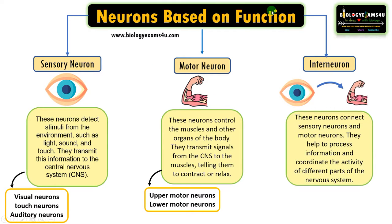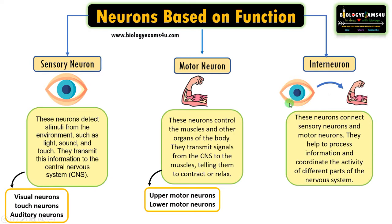The final type is the interneuron. Interneurons connect sensory neurons and motor neurons and are the most common type of neuron in the central nervous system. They connect different areas of the central nervous system and act as a middleman between sensory and motor neurons, connecting to other interneurons and allowing them to communicate with each other. The primary function of interneurons is integration — carrying sensory information and regulating motor activity. They also have functions including learning, memory, and decision making, helping to process information and coordinate the activity of different parts of the nervous system.